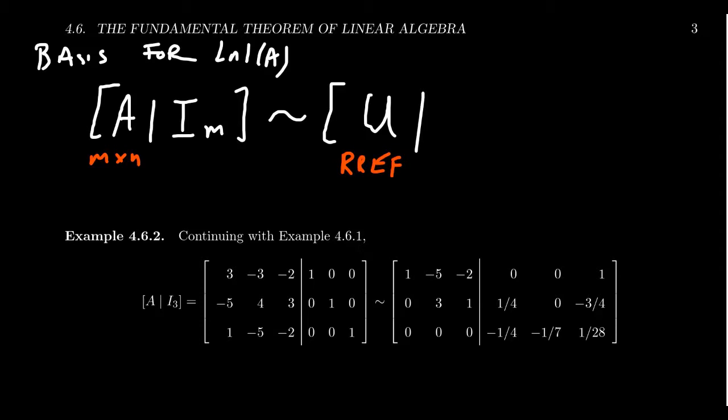Now, in the process of reducing A into U, the identity matrix will transform into the matrix E. And so it will transform into this matrix E right here.